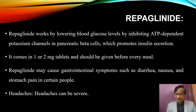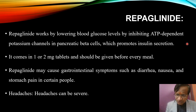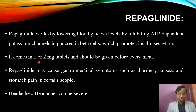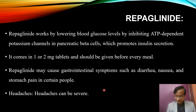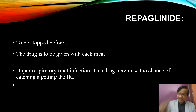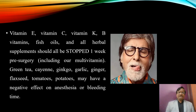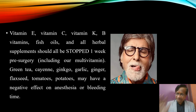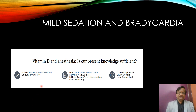Repaglinide works by inhibiting potassium channels in pancreatic beta cells, promoting insulin secretion. It comes in 1 mg or 2 mg doses, and must be taken with each meal. Since it is a prandial drug (taken with food), it must be stopped preoperatively. Additionally, urinary tract infections can occur. Vitamins — C, E, K — and supplements like green tea and ginkgo should be stopped one week prior due to potential platelet function issues.